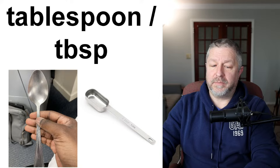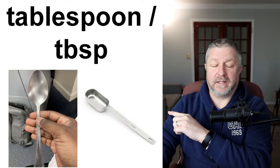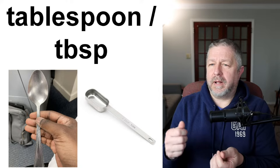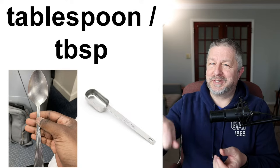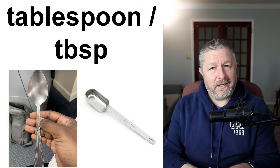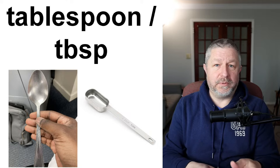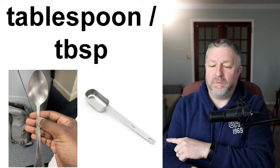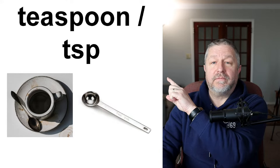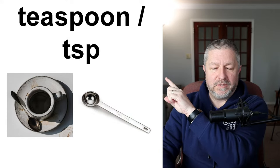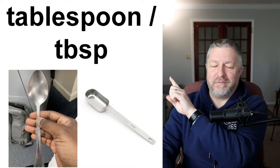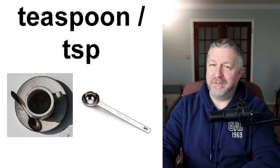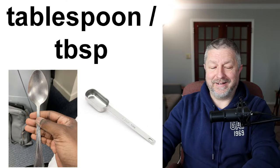We also have something called a tablespoon. In the far picture, that person is holding a tablespoon — it's slightly bigger than a teaspoon. If I was making something and it said to put in two tablespoons of olive oil, I would use this measuring spoon closest to me, which is exactly one tablespoon. Please notice the short forms: TSP is short for teaspoon and TBSP is short for tablespoon. You don't want to get those confused, especially when putting salt in a recipe — one teaspoon versus one tablespoon will taste very different.